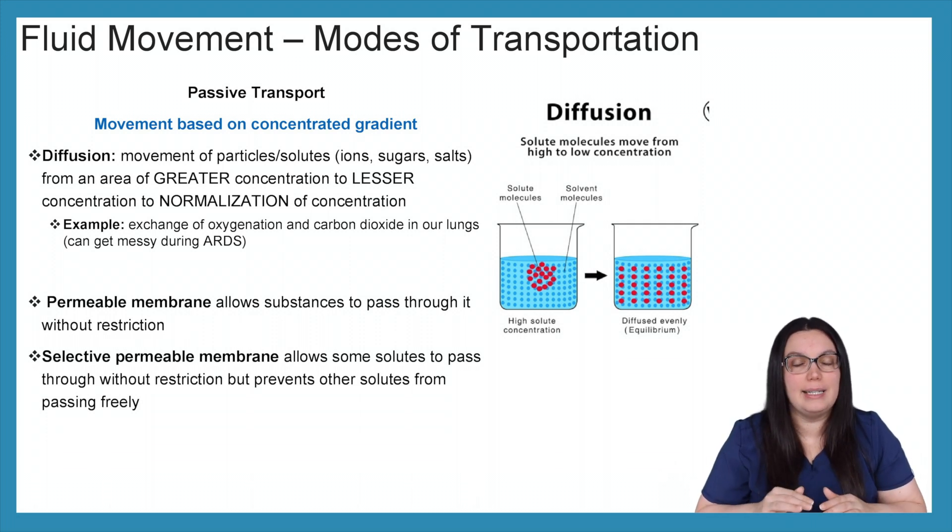This can get a little messy when it comes to acute respiratory distress syndrome because as we know we have all this fluid buildup in our lungs and this is a passive transport. Diffusion requires it to be able to pass without any kind of active component. So oxygen is unable to diffuse past all that fluid buildup which causes a lot of problems with our ARDS patients.